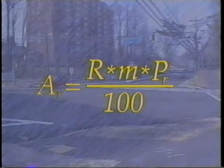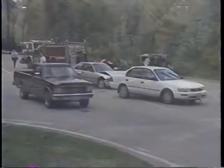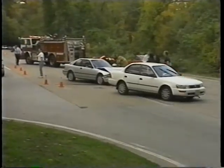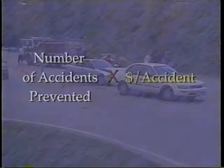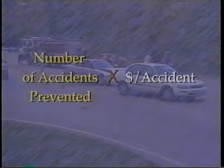Next, Bill will calculate the safety benefits to society for each alternative. He will figure this value by multiplying the number of accidents prevented by the total cost of each accident to society.